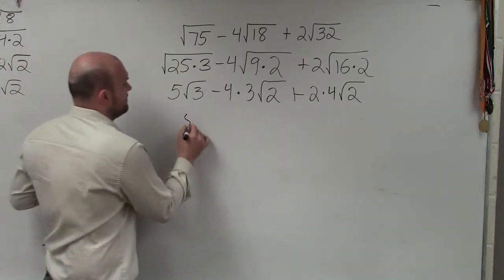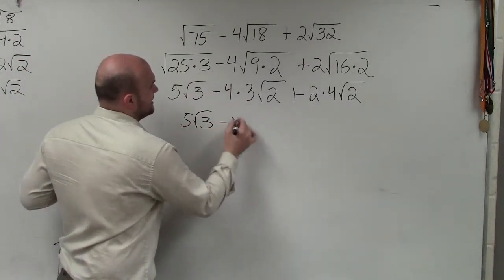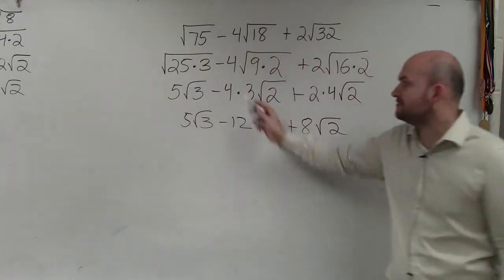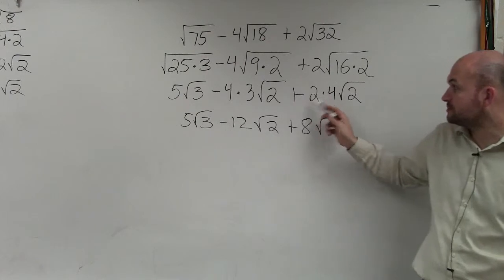So now I have 5 square root of 3 minus 12 square root of 2 plus 8 square root of 2. I did negative 4 times 3 is negative 12. 2 times 4 is 8.